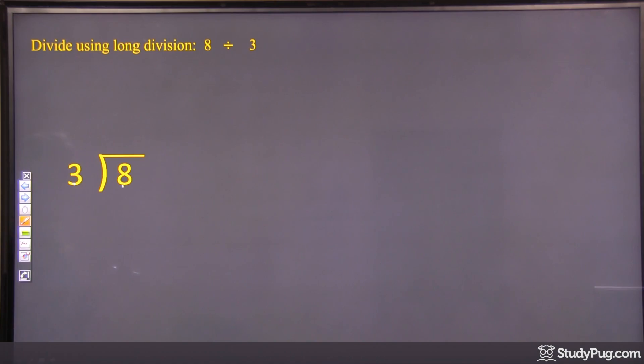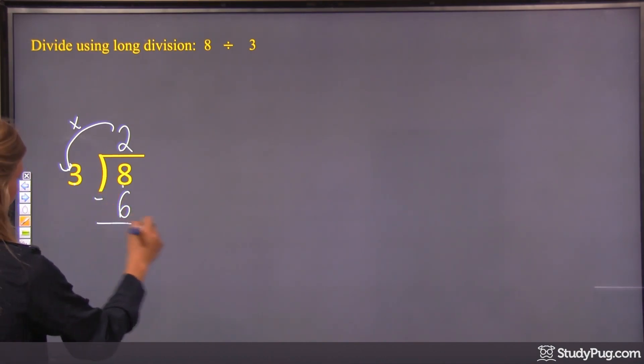Well, 3 times 2 is 6, and 3 times 3 is 9. So 3 times 3 is too big, so we'd have to do 3 times 2. So 2 times 3 is 6. We'd write the 6 there and subtract, and we'd be left with 2 here.